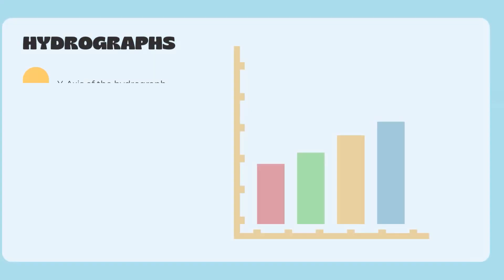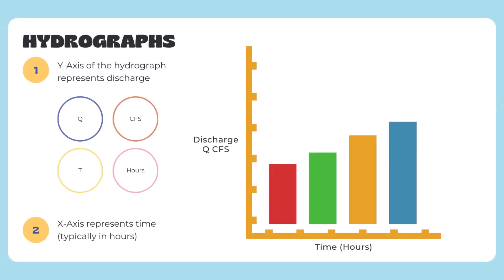So what is a hydrograph? What are the components? Typically it includes discharge Q in CFS on the y-axis for English units and time in hours or minutes on the x-axis. By graphing this relationship, we can determine the characteristics of the watershed and make some judgments about that watershed.